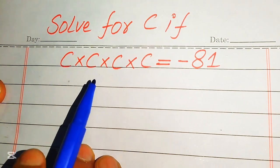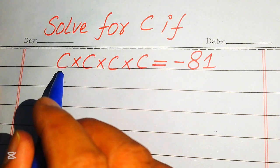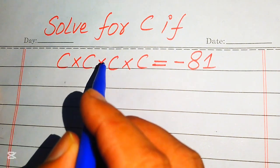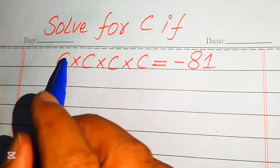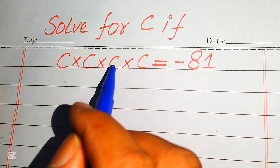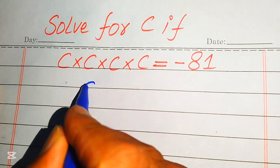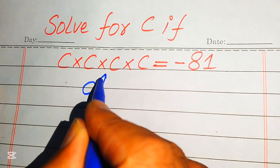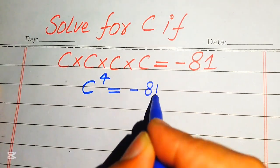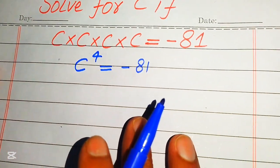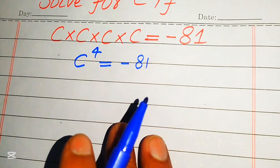Here you see that c is multiplied 4 times. We know that if a number is multiplied 4 times then we can just add its exponents. Here you see that all of these exponents are 1, so when we multiply this c we get c to the power of 4, and it equals minus 81. Now in the next step we need some simplifications in order to solve this problem.